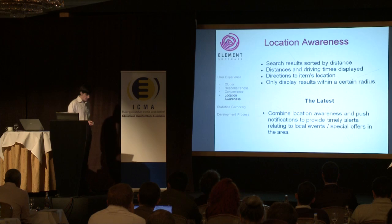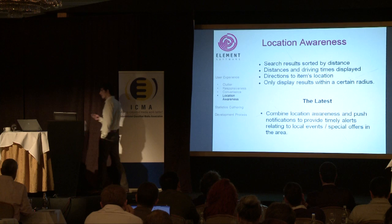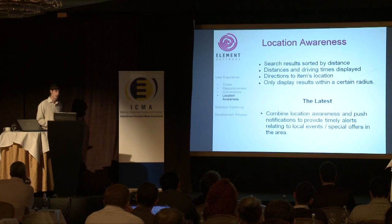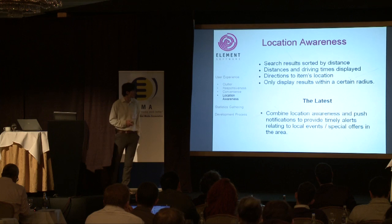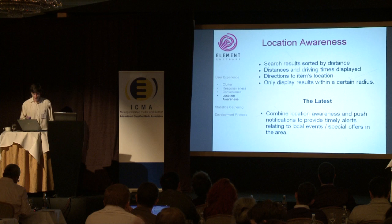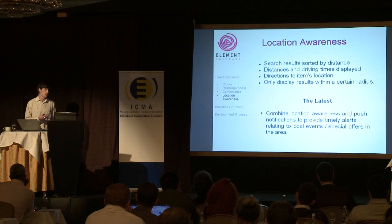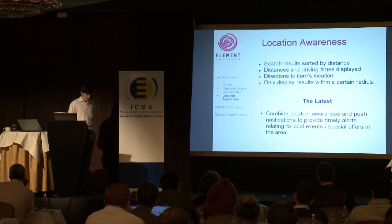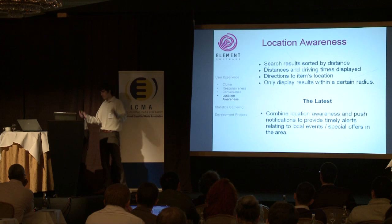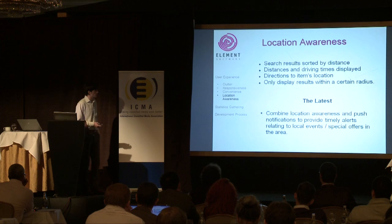Apps should take advantage of the technology available to them, and one of the big hitters here is location awareness. This can add a lot of context to the user experience. You can sort your search results by distance, display driving times next to each search result, see directions to an item's location, give the user the option to only search within a certain radius of where they are right now — all these delivering value that you can't get on a standard web interface. Take an example: a user searching for a second-hand car only wants to stay within 10 kilometres of where they are, so they sort their search results by distance.